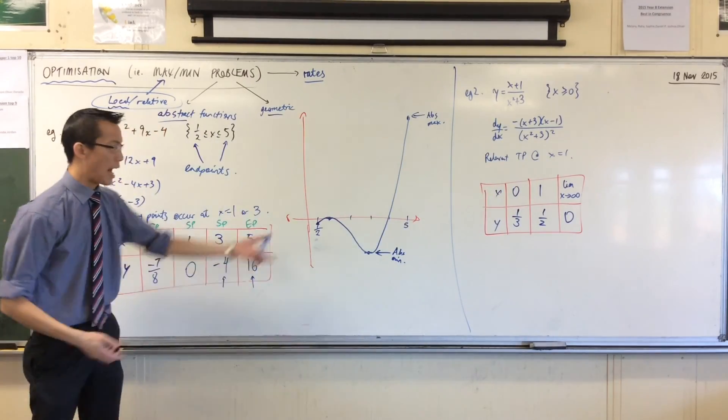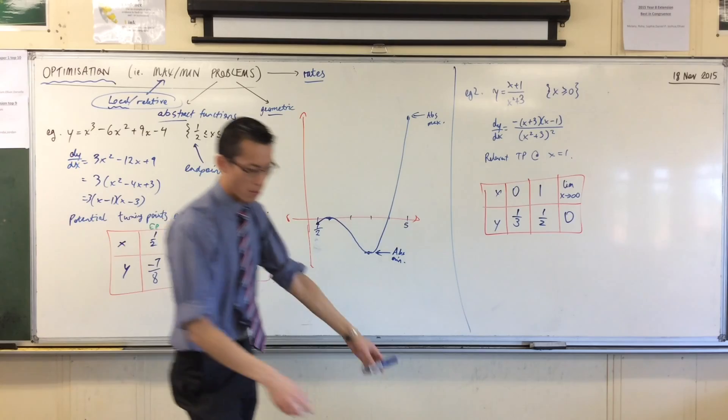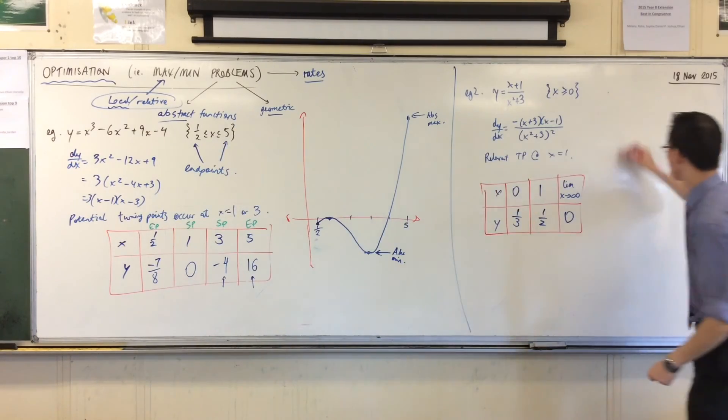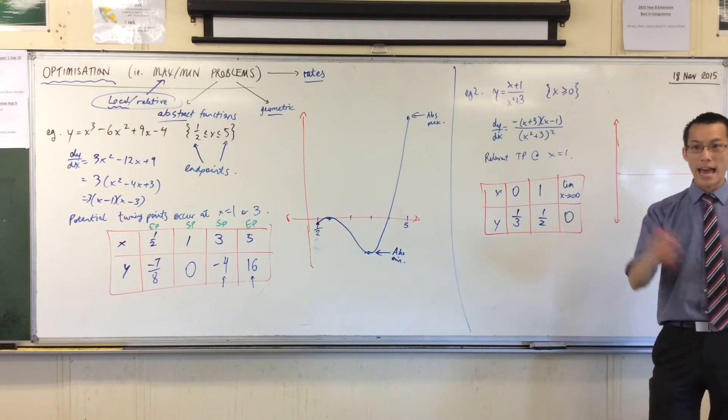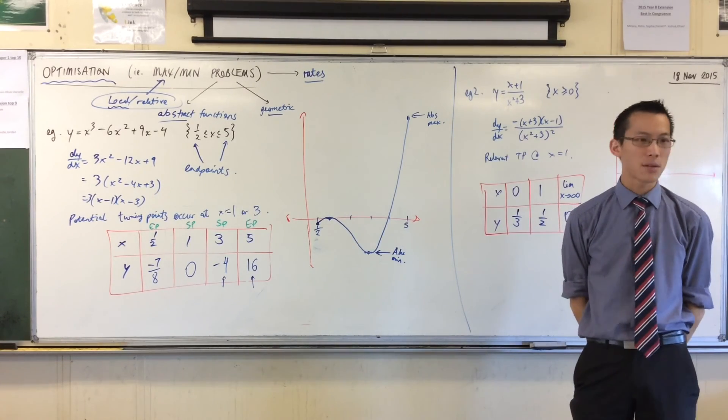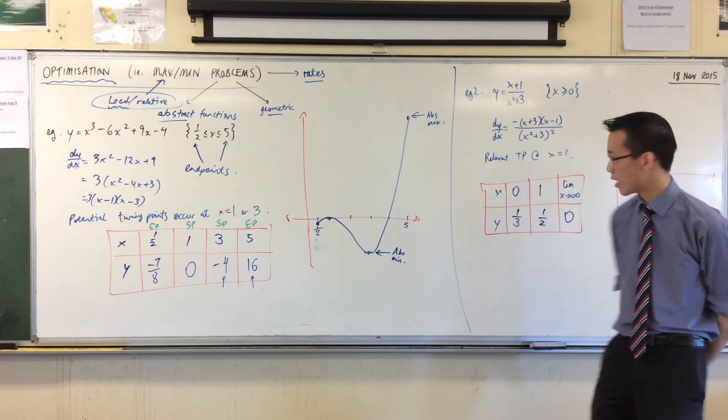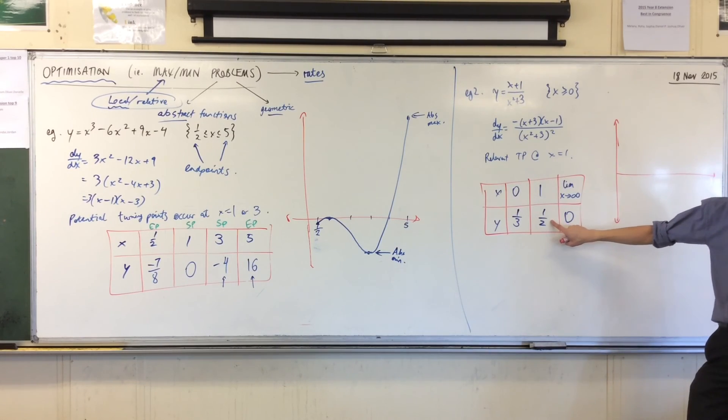Now, before we draw some conclusions, I want a picture. What does this thing look like? Pause for a second. I haven't done the second derivative. I haven't done the table of values for the first derivative either, but I already know what kind of stationary point this is. What kind of stationary point is it? It's a maximum.